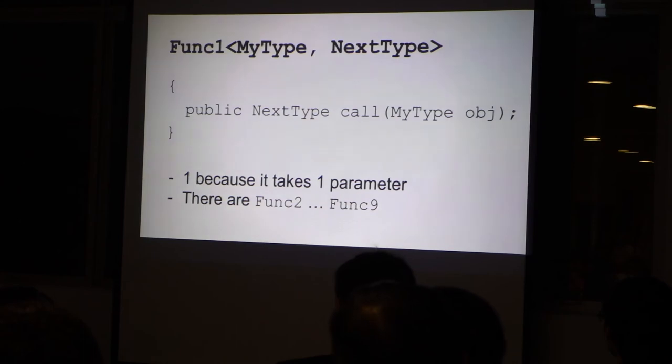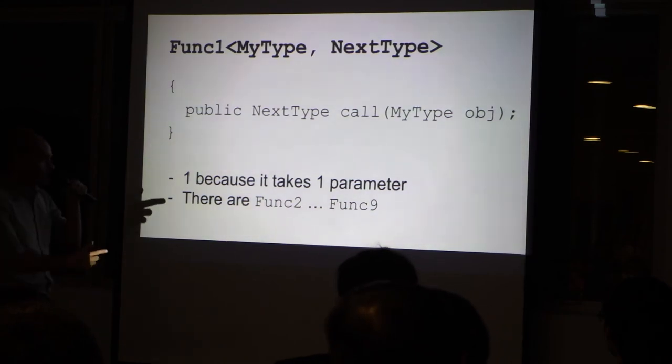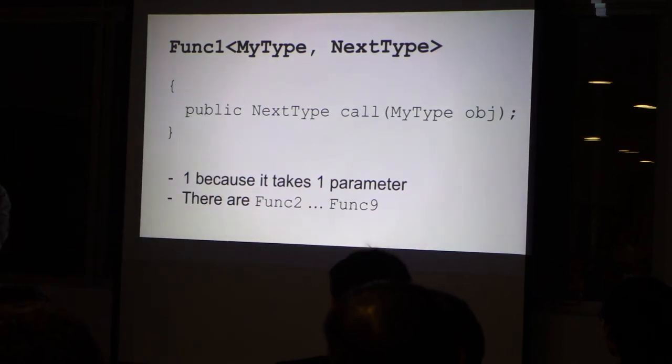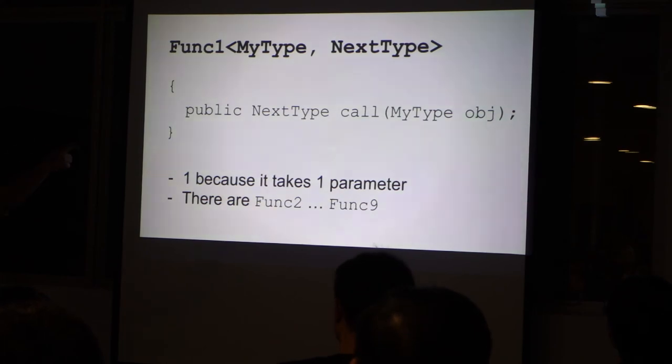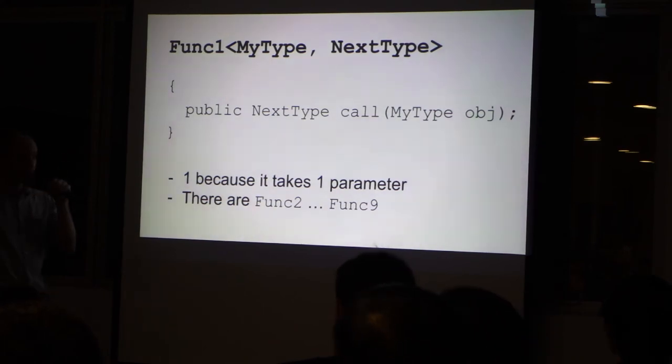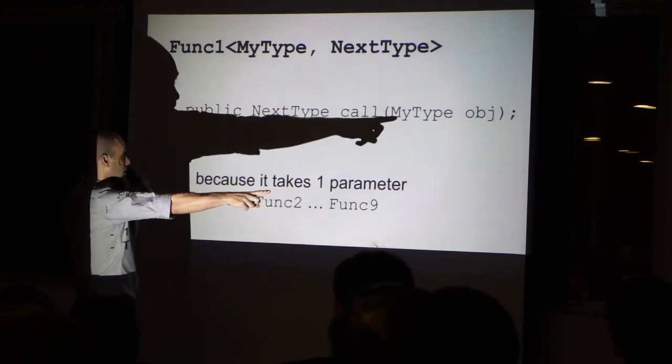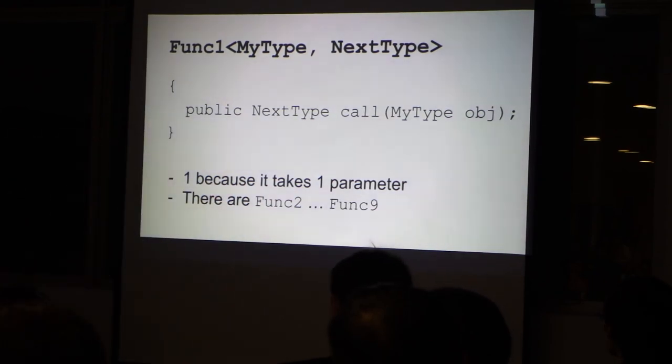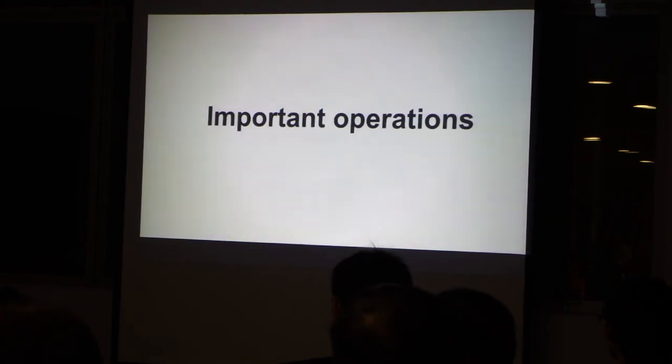Similarly, Func1 is like an action, takes an element but returns another element, so this one is a transform. When you had earlier transform A to B, this was A type, this is B type. You transform an object into another one. Similarly, you can have a function with more than one object.